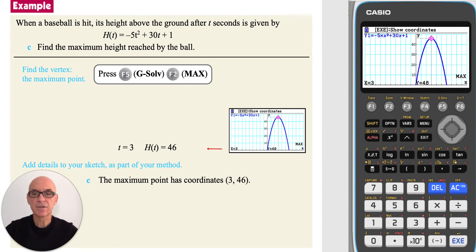In part C, to find the maximum height reached by the ball, the y-coordinate represents the height of the ball. So the maximum height reached by the ball is 46 meters.